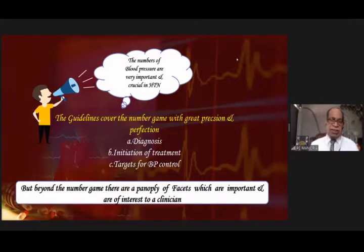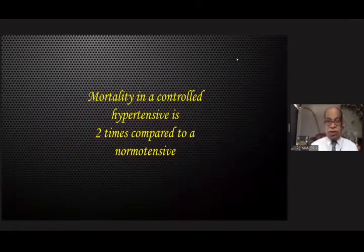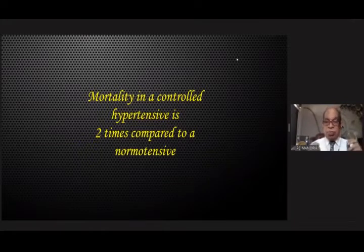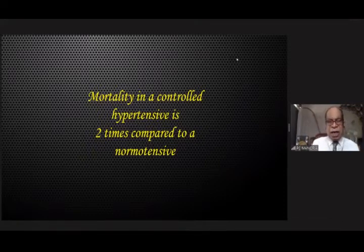But interestingly, behind the number game, there are a panoply of patients which are important and are of great interest to a clinician. The first issue I'm going to discuss is mortality in a controlled hypertensive. The mortality in a controlled hypertensive is at least two times compared to a normal individual, which means if you're a hypertensive and you control your blood pressure to the target level, you still do not come at par with a normotensive. There are a couple of reasons for this.